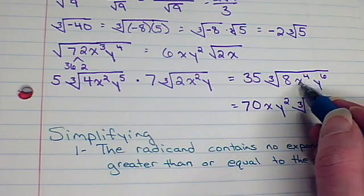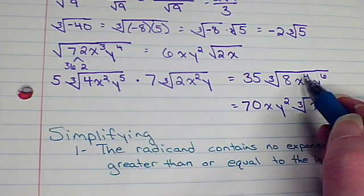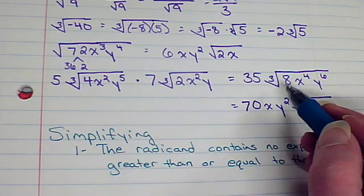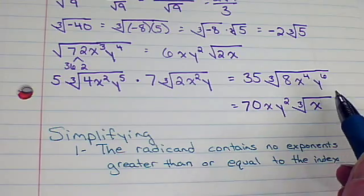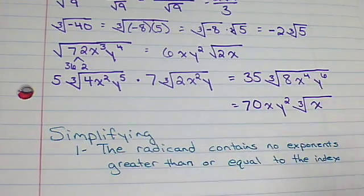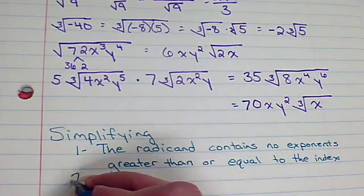So, that's why we must keep simplifying when we have a situation like this. x⁴, that is greater than the index. 8 is really 2³. That is equal to the index, so we have to do it. We have to simplify it.